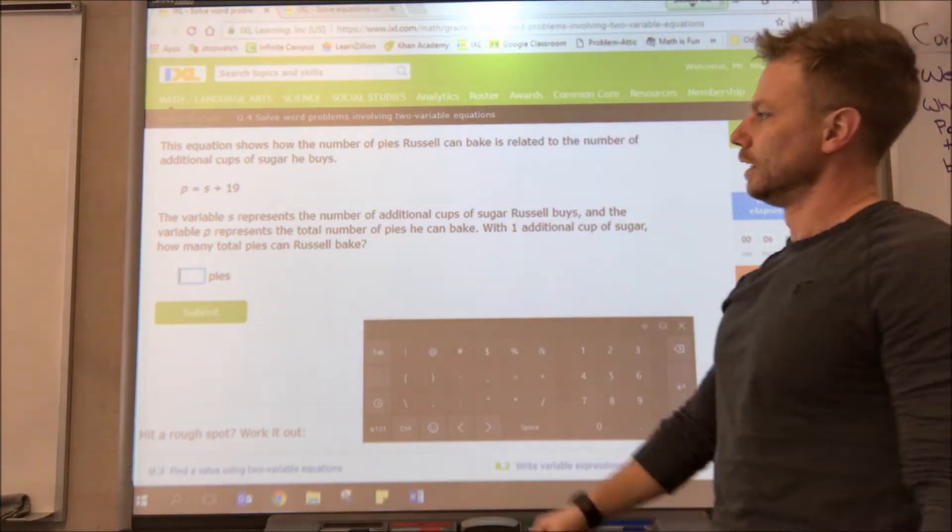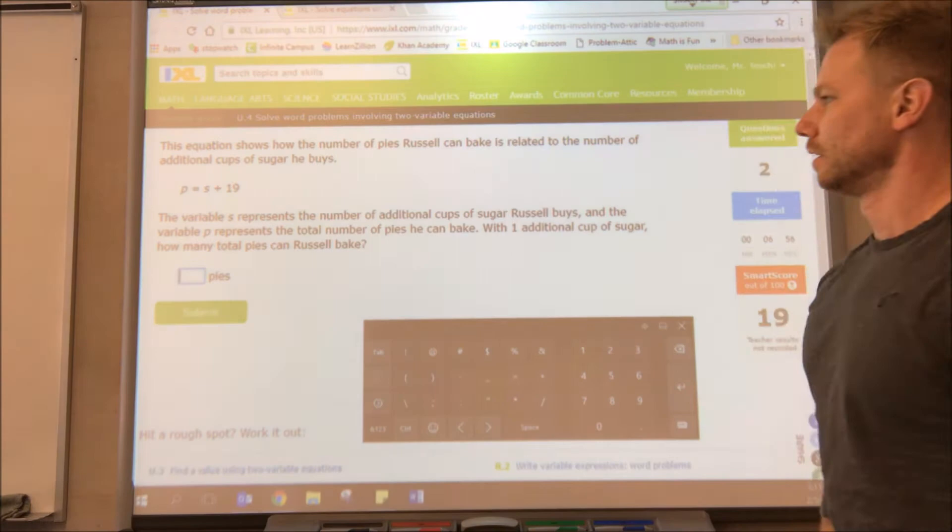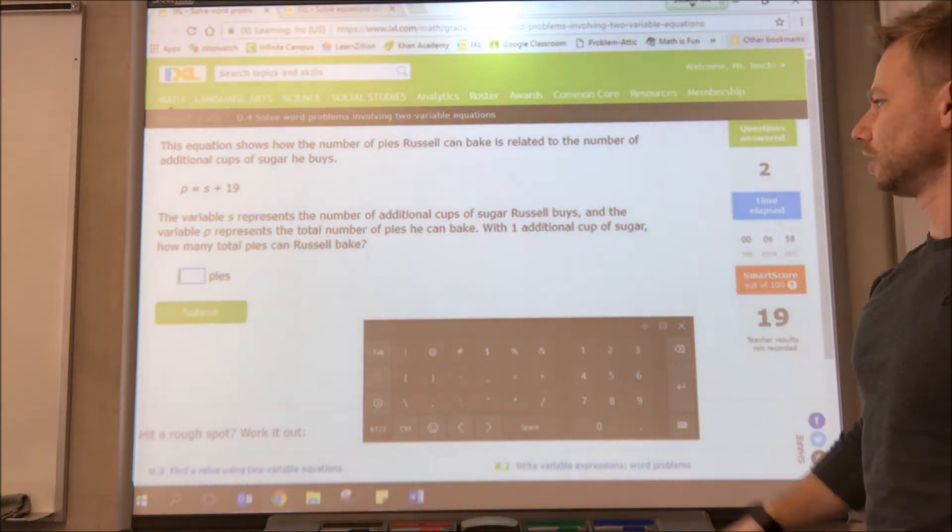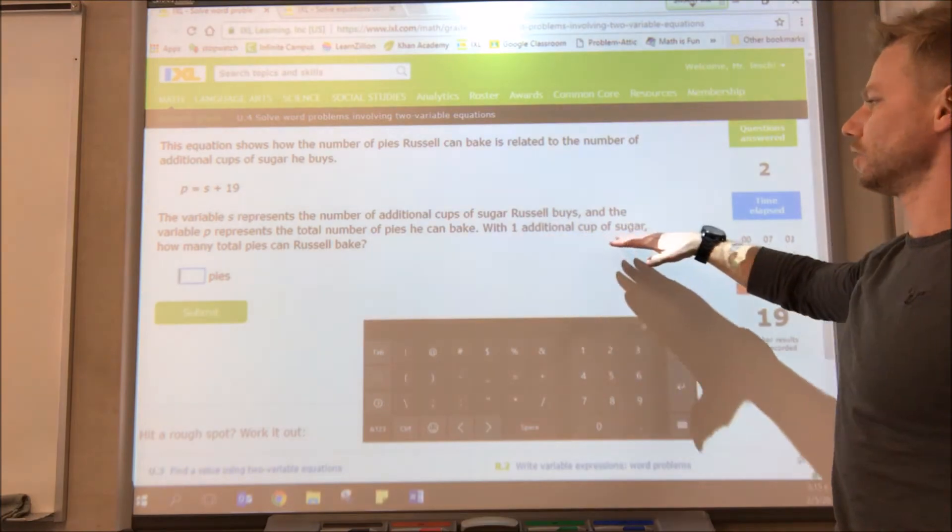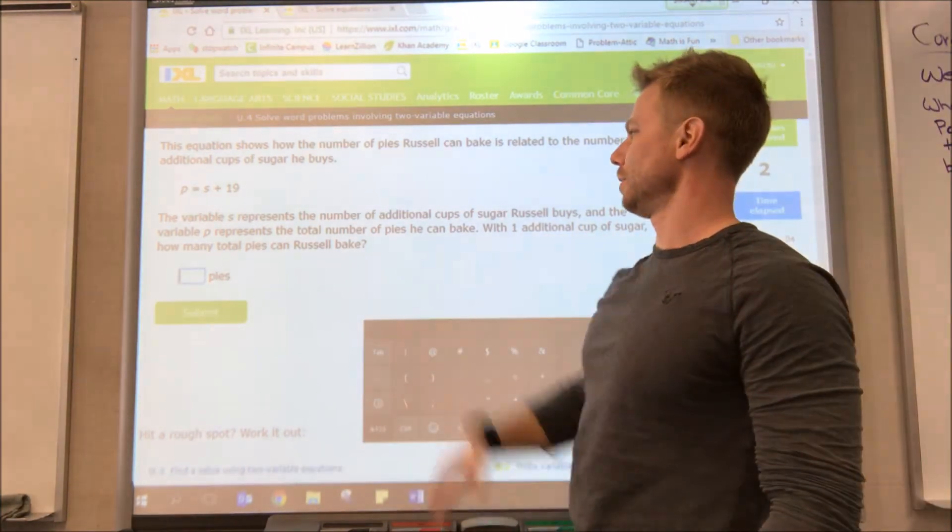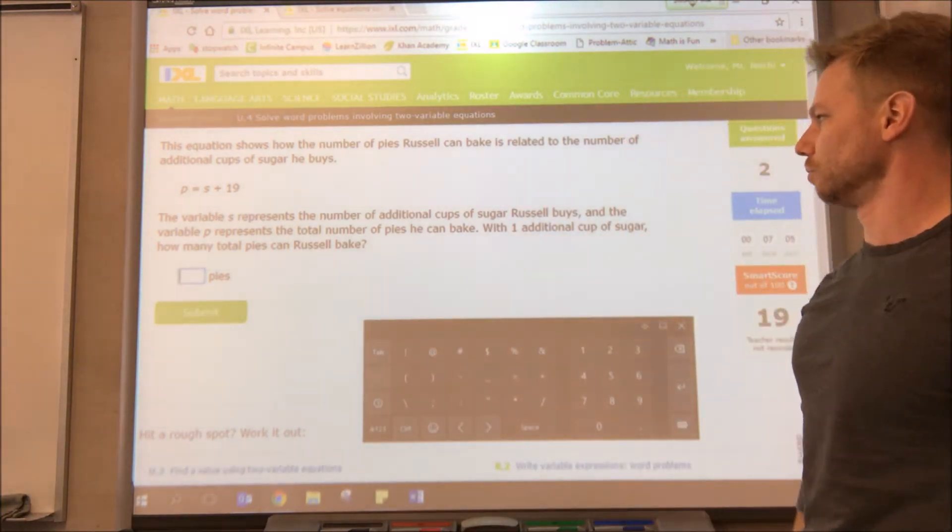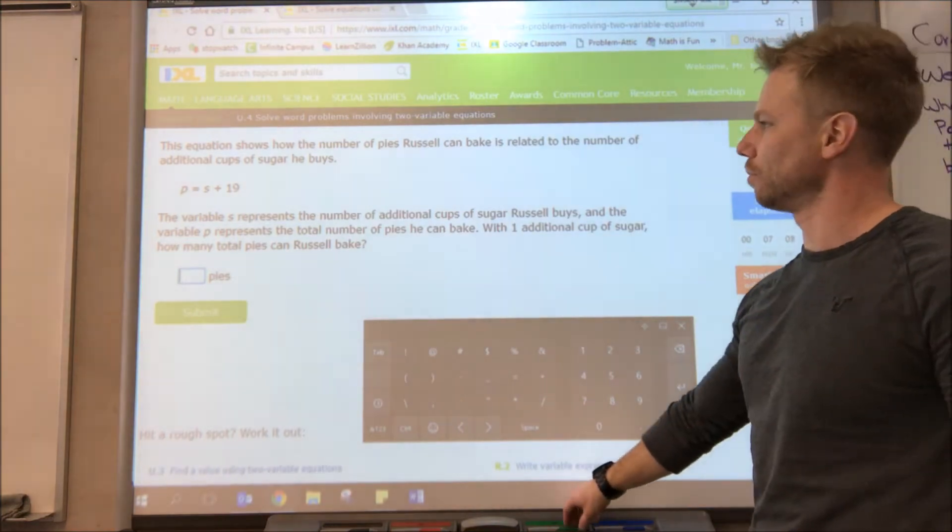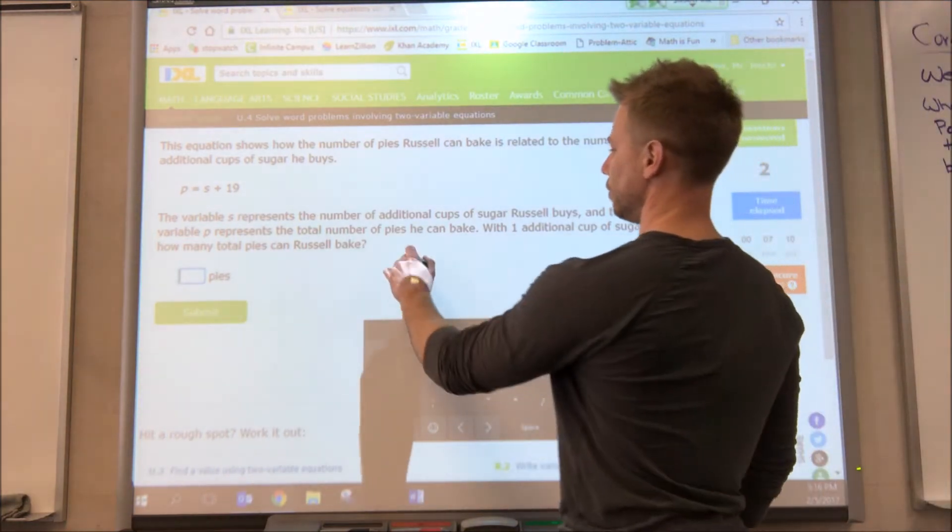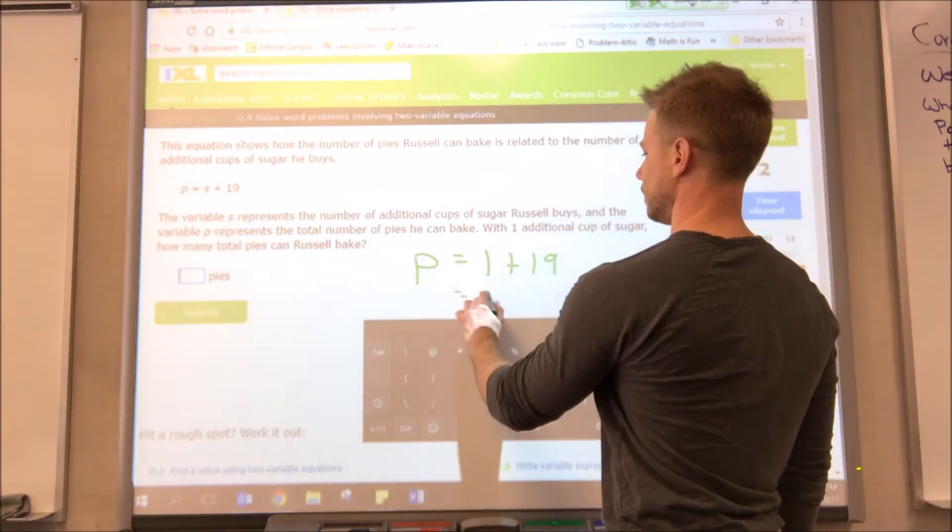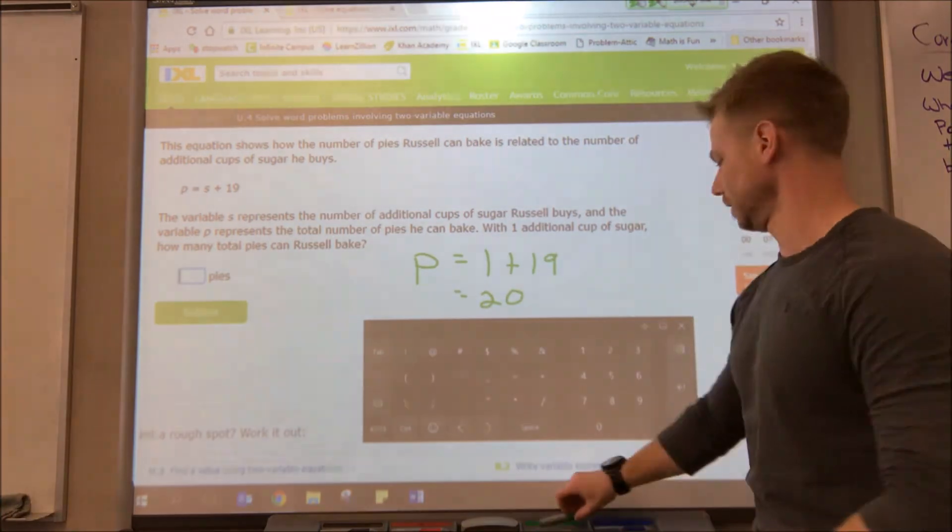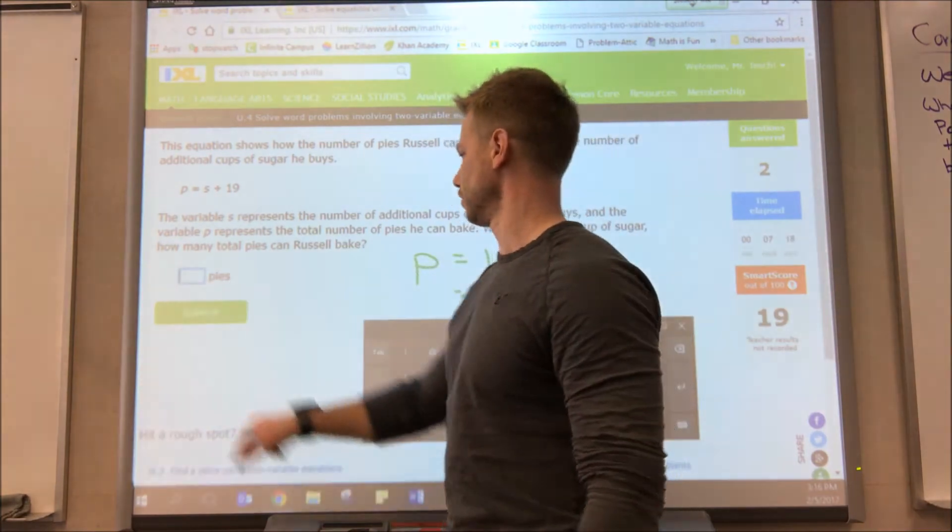One more. They give us our equation again. s represents the number of sugar and p represents the total number of pies. With one additional cup of sugar, how many pies can Russell bake? So in place of s we will put 1. 1 plus 19 equals 20, so our answer is 20.